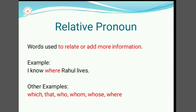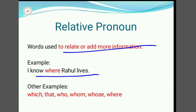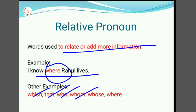Relative pronoun: words used to relate or add more information. For example, 'I know where Rahul lives.' Here, 'where' is an example of a relative pronoun. Other examples include: Which, That, Who, Whom, Whose, and Where.